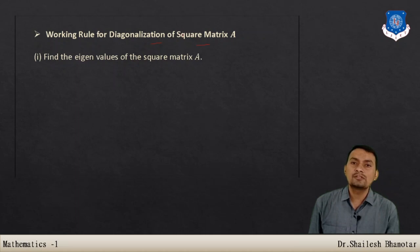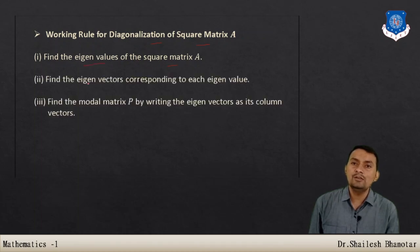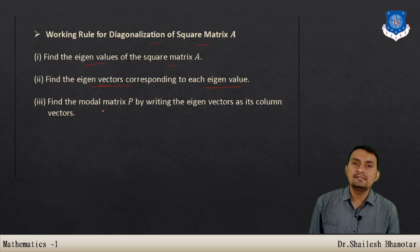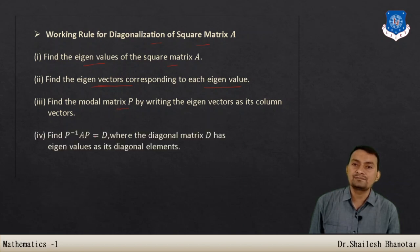Let us see the working rule for diagonalization of a square matrix A. First, find the eigenvalues of matrix A. Then find the corresponding eigenvectors. Next, write the eigenvectors as column matrices to form the modal matrix P, and then find P inverse AP. To determine P inverse, you can use the adjoint method.